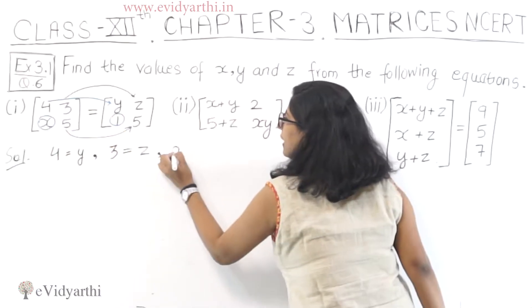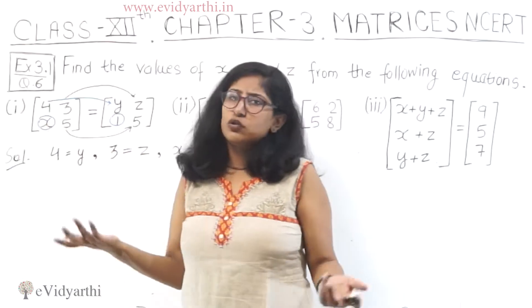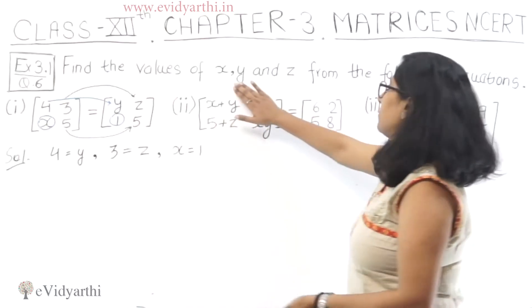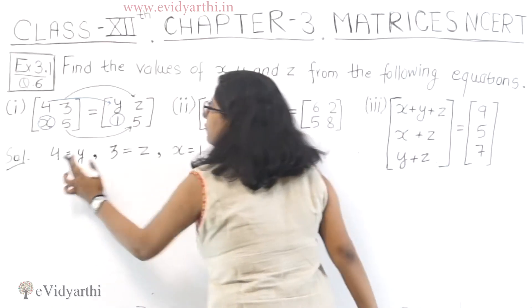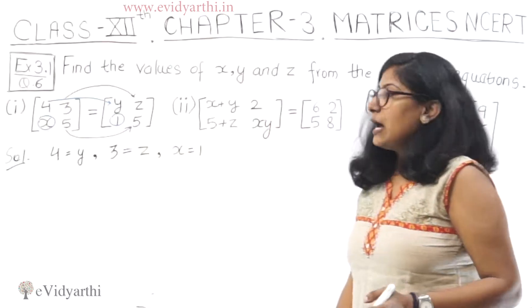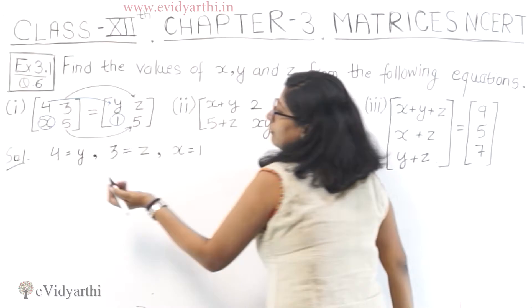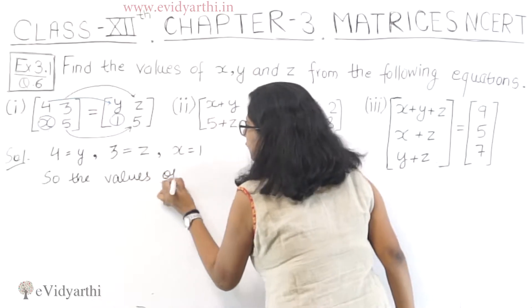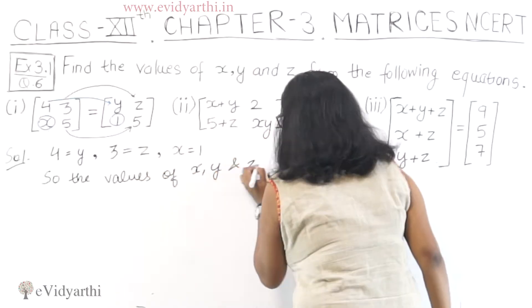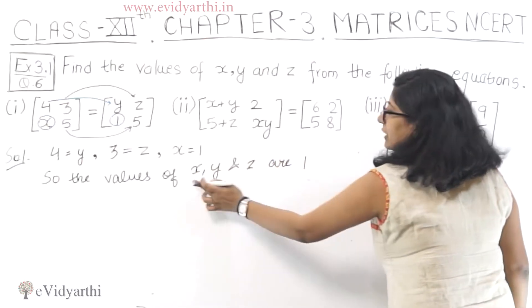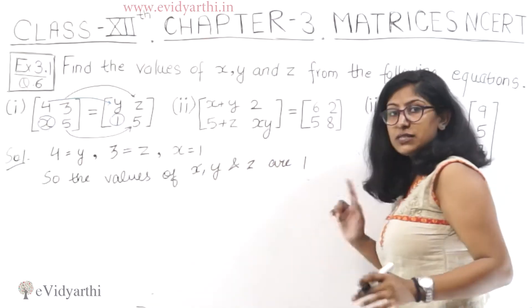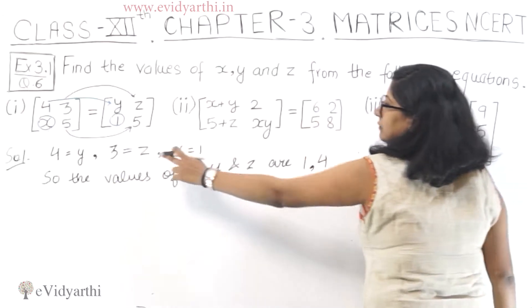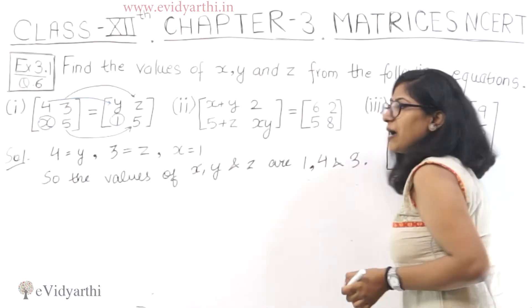What about x? What about 5? We know the answer. We need to write it because we are finding the answer. So y is 4, z is 3, and x is 1. We find the three values. So the values of x, y, and z are: x is 1, y is 4, and z is 3. This is our first part of the solution.